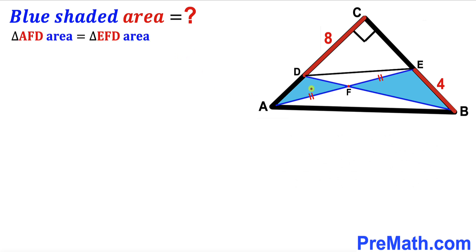So therefore we conclude that the area of triangle AFD is equal to the area of triangle EFD, as you can see in this equation. If I label the area of triangle AFD as A₁.